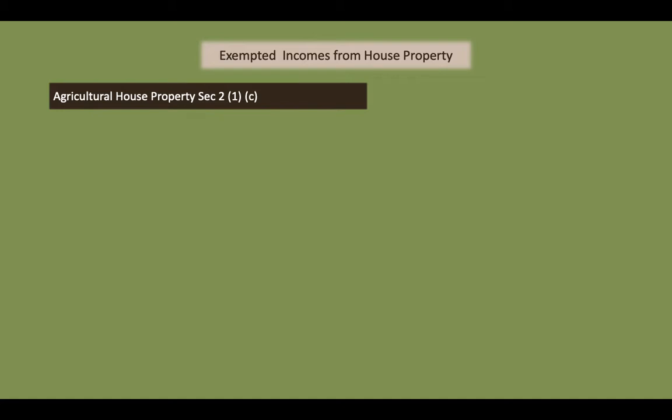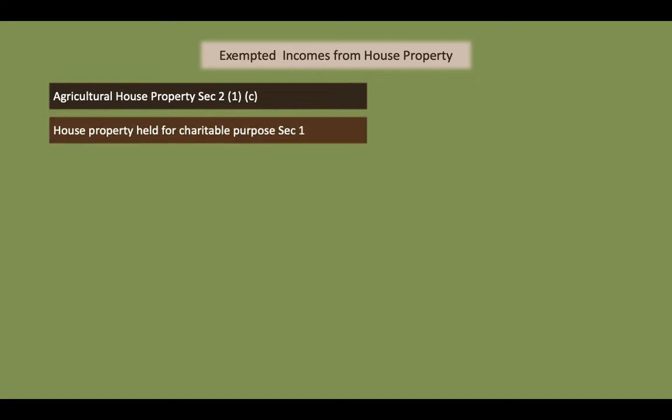The incomes which are exempted from tax: the first one is agricultural house property under Section 2(1). Income from house property situated on or in the immediate vicinity of agricultural land and used for agricultural purposes is exempted from tax. Second, house property held for charitable purposes — for example, rent from shops owned by temples, churches, or religious institutions.